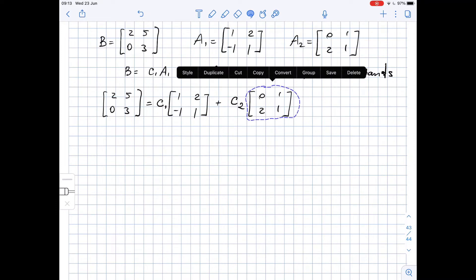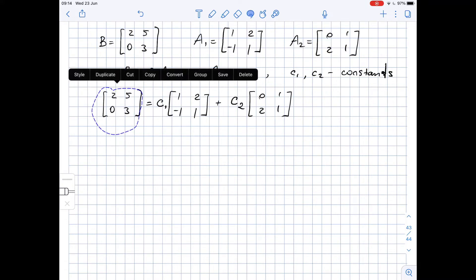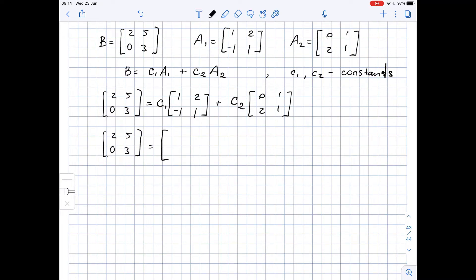Since C1 and C2 are constants, that means they are scalar numbers and we can do multiplication by scalars here. So we will get that matrix B equals 1 times C1, which is C1, then 2C1, negative C1 and C1.